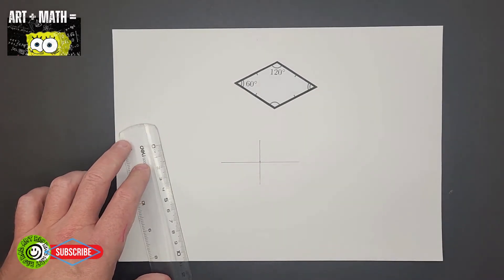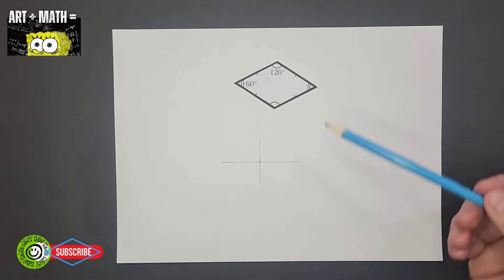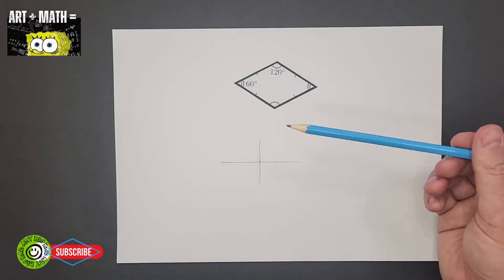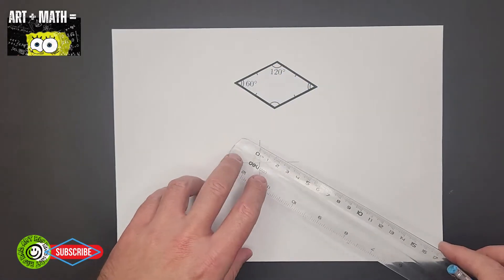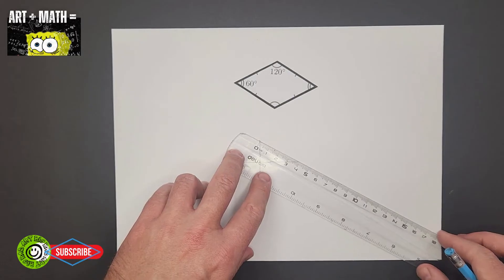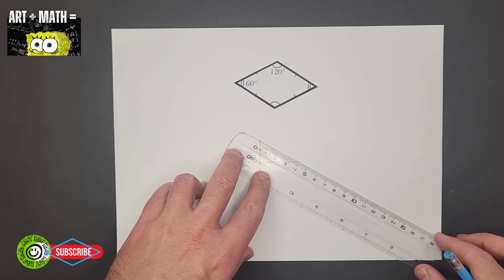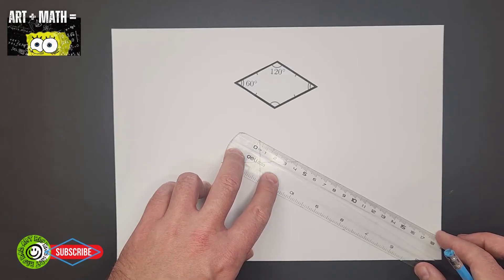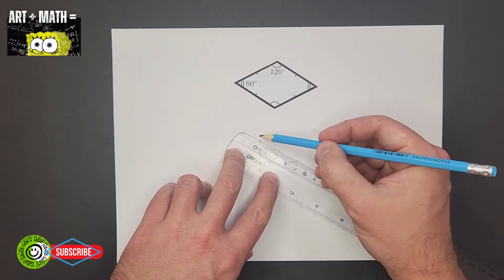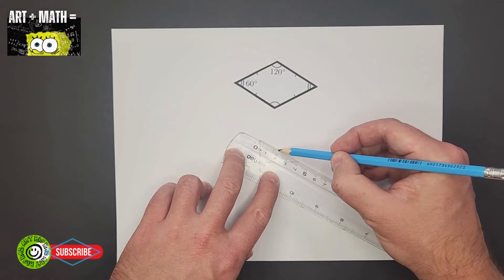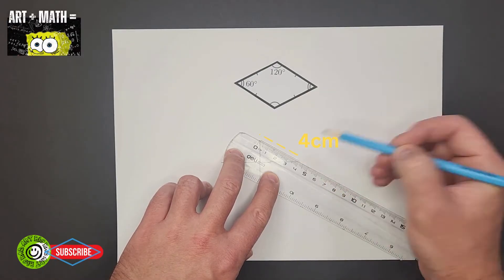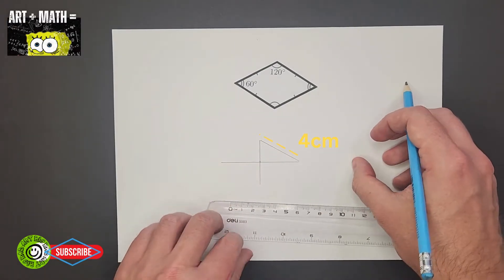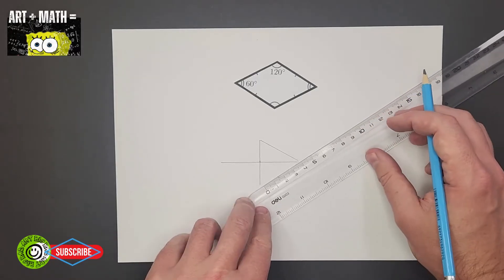Okay, and we're recreating this rhombus here. Next, if you join the ends of the lines, they should all measure the same distance. So hopefully this one is four centimeters.